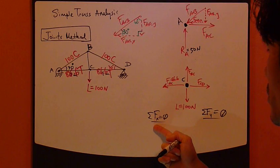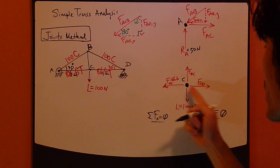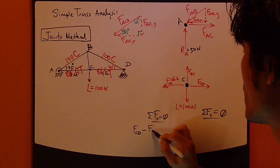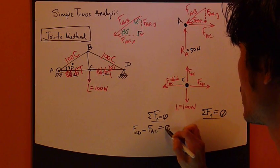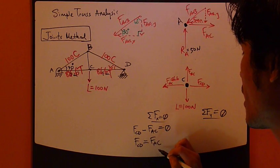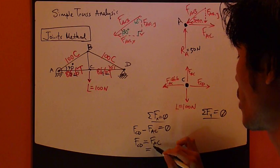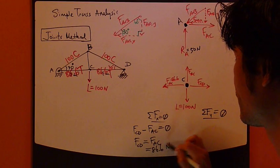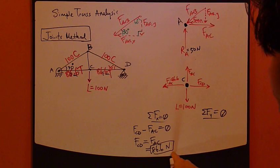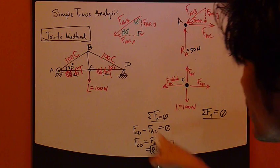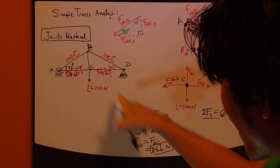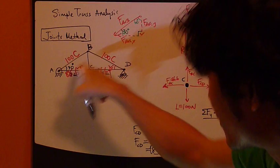Sum of forces X equals zero. So only these two guys in the X direction. So therefore, FCD minus FAC equals zero. Here, FCD is the unknown, so move FAC to right-hand side. FAC has been solved for earlier. So FCD is 86.6 Newton, which is this right here. So we've just proven that this is actually true. It's actually symmetrical.